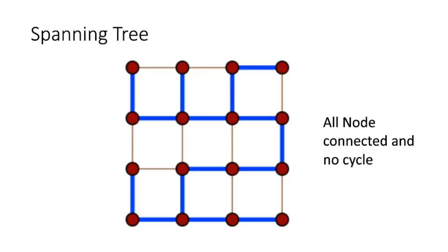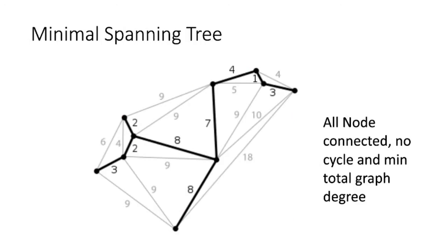So what is a spanning tree? If the nodes are brain regions and the edges are connections, a spanning tree is a graph where all nodes are connected and there are no cycles. There are many ways to connect everything — you could remove one connection and add another. If you want the minimal spanning tree, you choose the spanning tree with the smallest total edge weight.